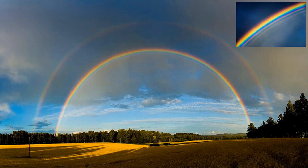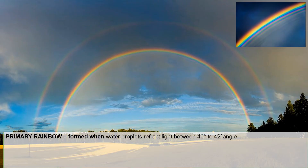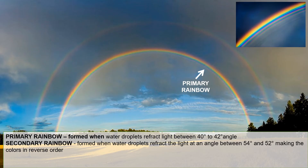Rainbows are formed from the dispersion of light on droplets of water in the atmosphere. When water droplets refract light between 40 and 42 degrees, a primary rainbow is formed. We may see a second rainbow which is fainter than the first — this happens when two reflections are made inside the water droplets. A secondary rainbow is formed when water droplets refract light at an angle between 52 and 54 degrees, making the colors appear in reverse order.